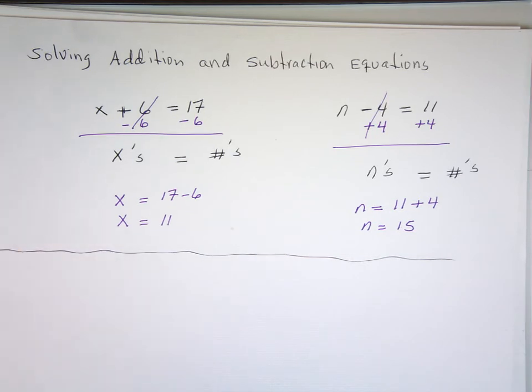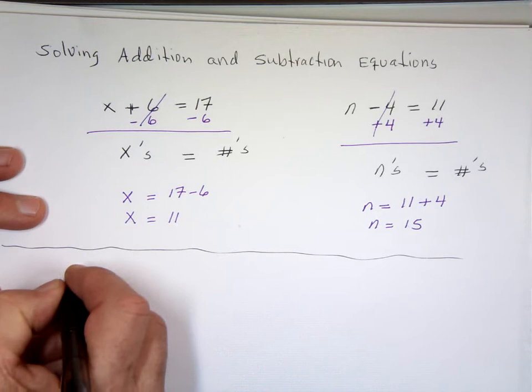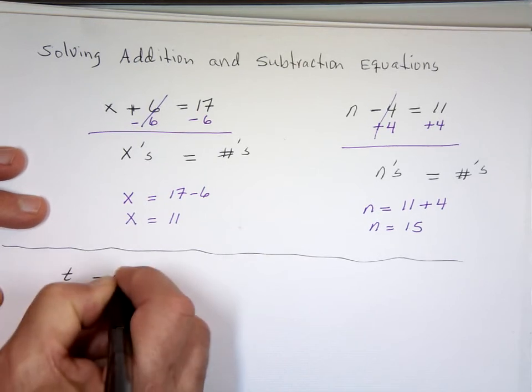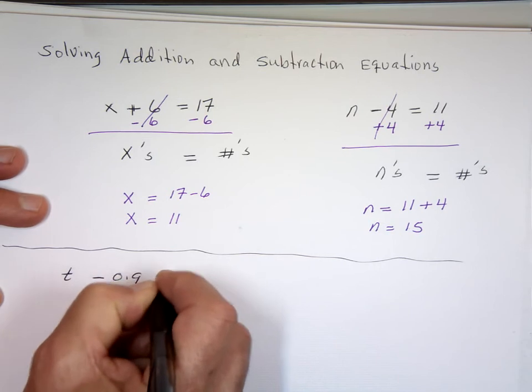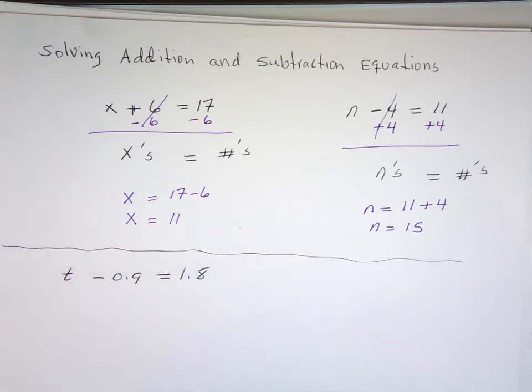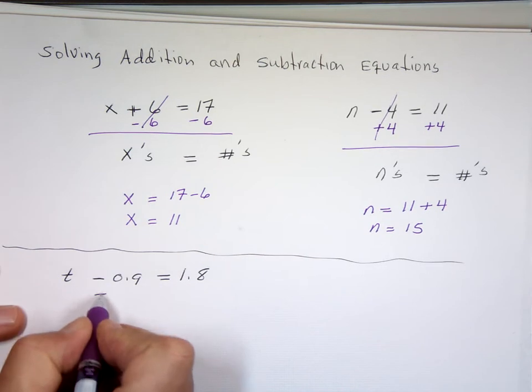Let's take this example. t minus 0.9 equals 1.8. All the t's on one side, all the numbers on the opposite side. So what are you going to do? Add. Add what? 0.9. Yep.